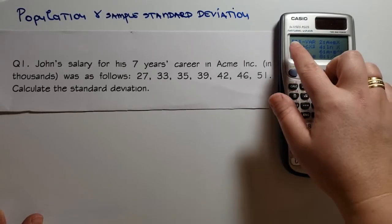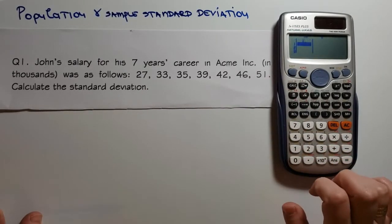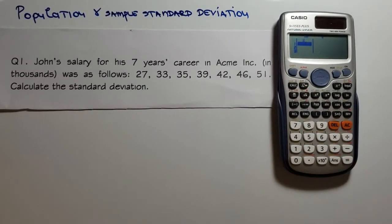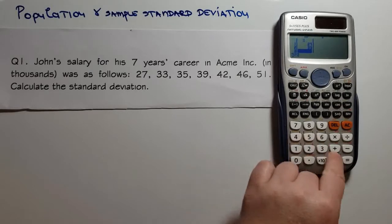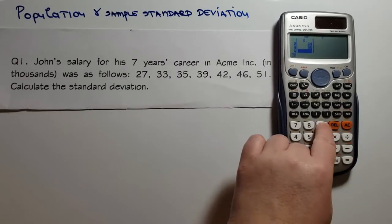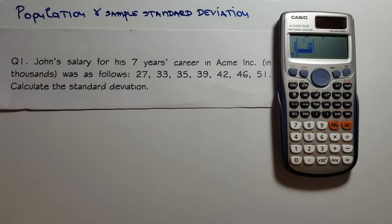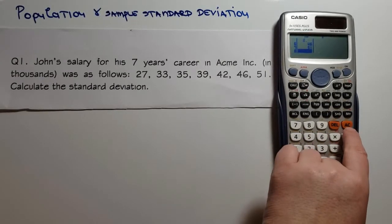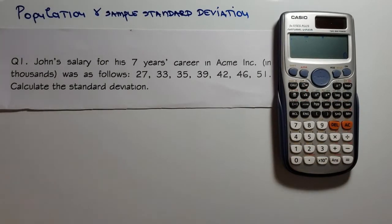And now we choose one because we have only one variable. And now we have 27 equal, 33 equal, 35, 39, 42, 46, and 51 equal. And I press the all clear button here in order for the calculator to save these values.